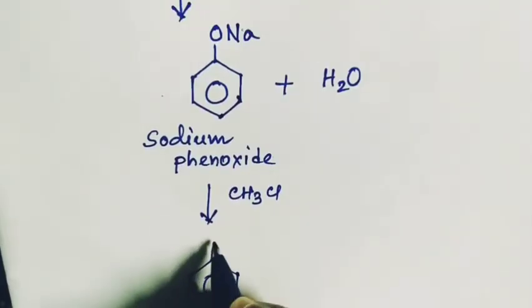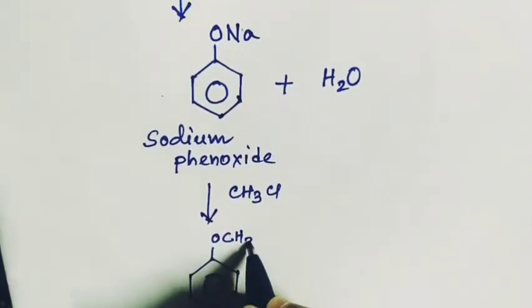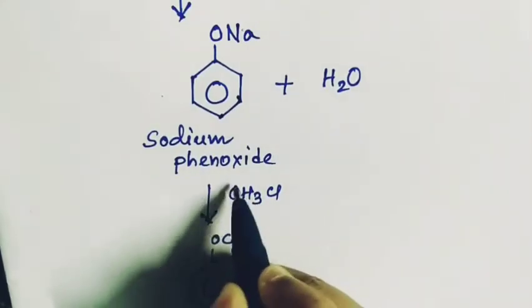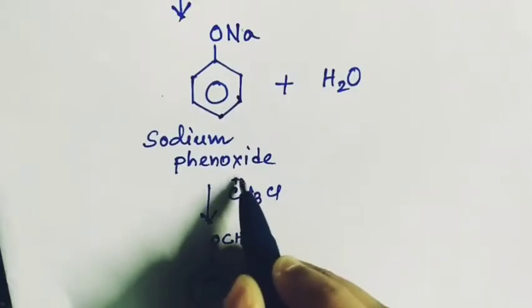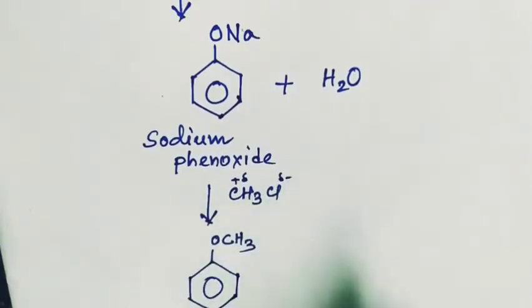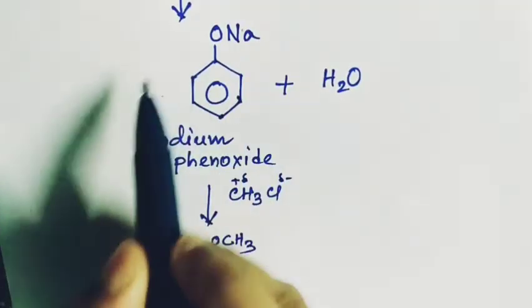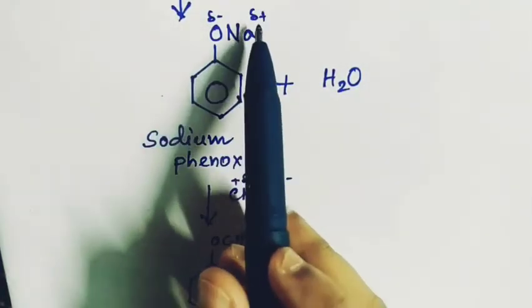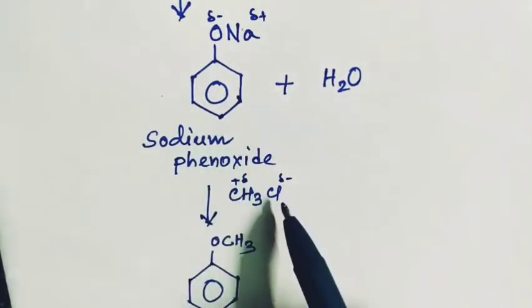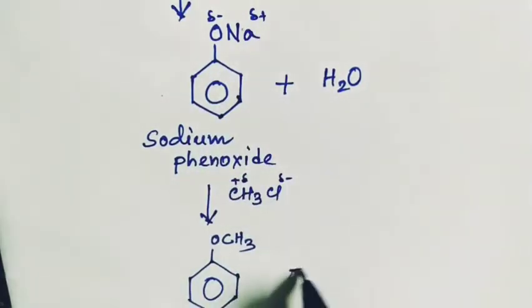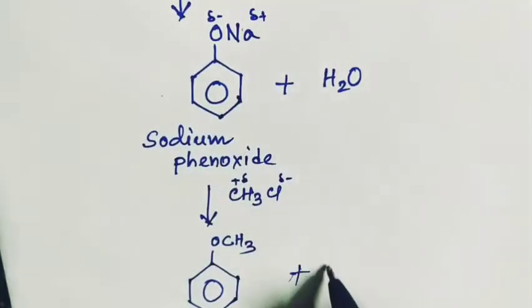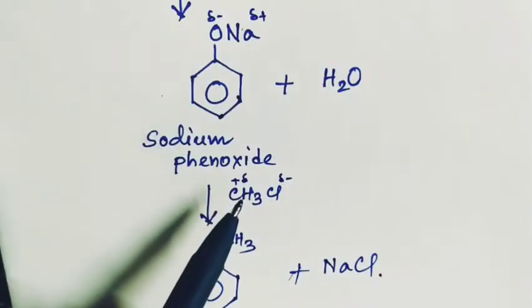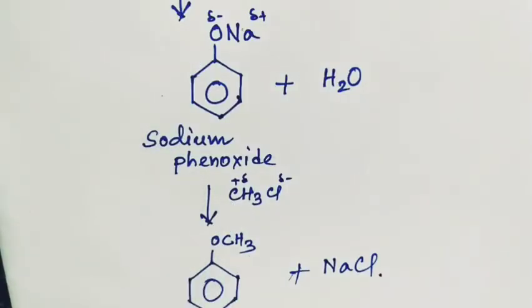Benzene ring and here it is OCH3, that is anisol. Because here the CH3 is delta positive and in the phenoxide on oxygen atom it is delta negative and on sodium it is delta plus. So the plus will attract the minus. So Na+ will attract the Cl-, forming NaCl, and oxygen will attract the CH3 part, so here it is OCH3.